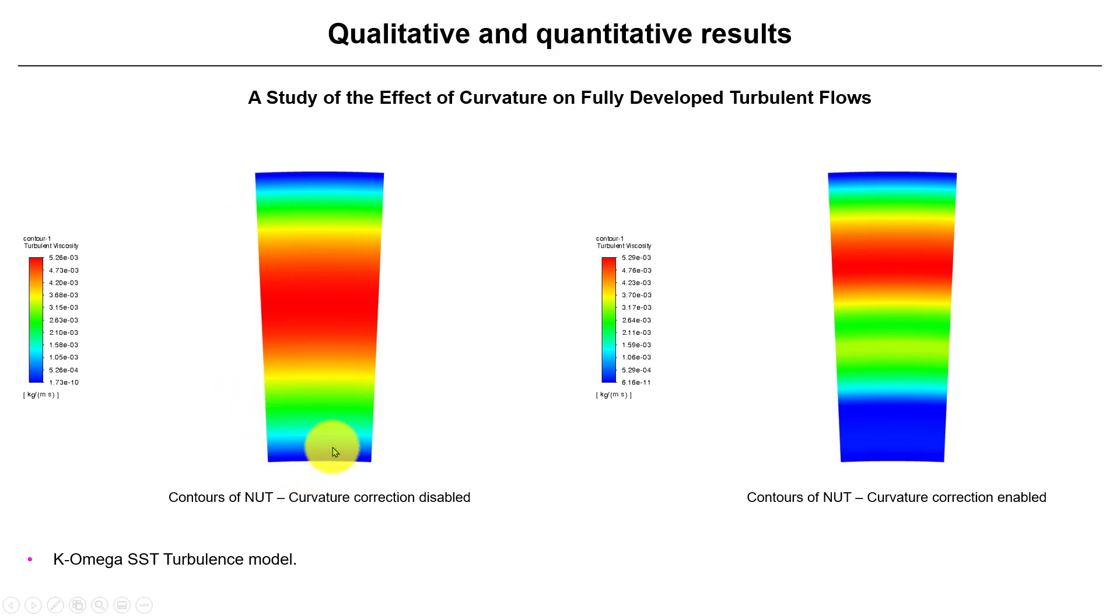When you have curvature, this velocity profile should have the tendency to concentrate more turbulence toward the outer wall. But see when you disable that one, it tends to remain a little bit symmetric. So this is, in this case, what it's doing.